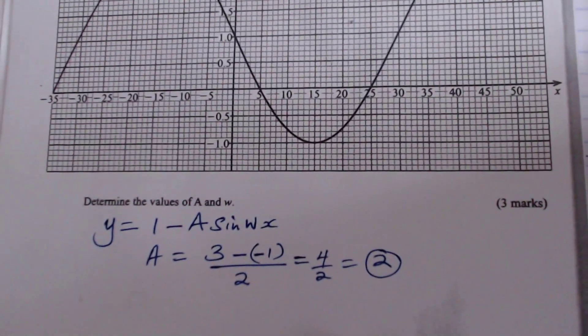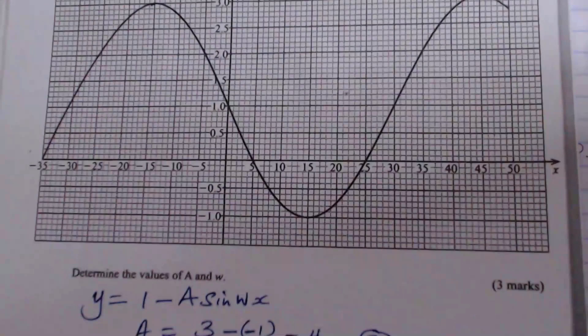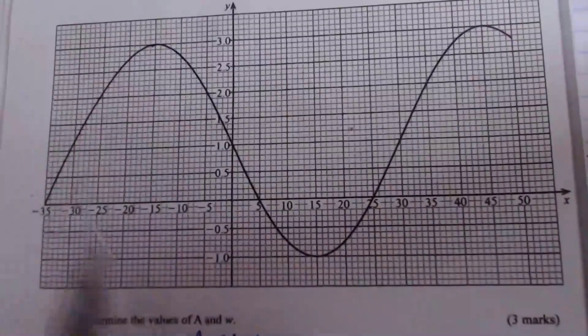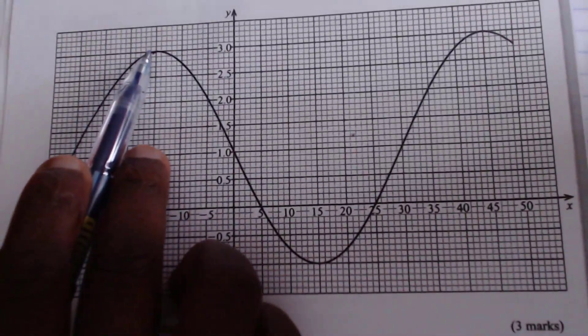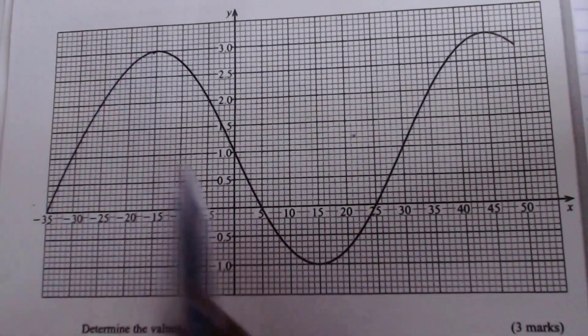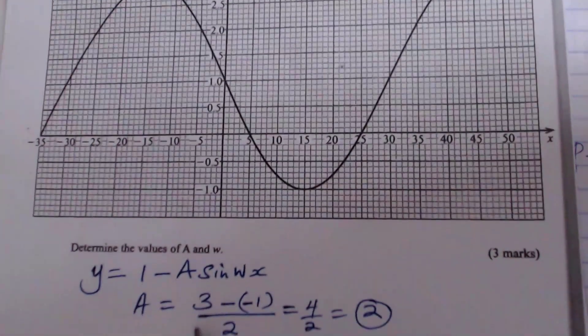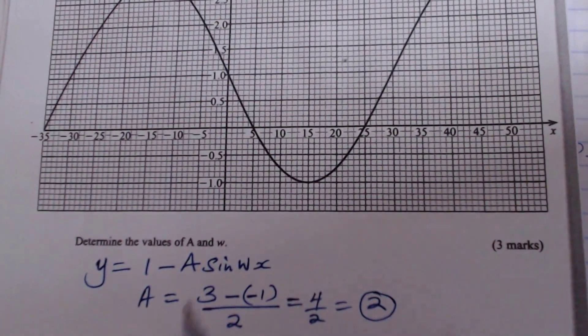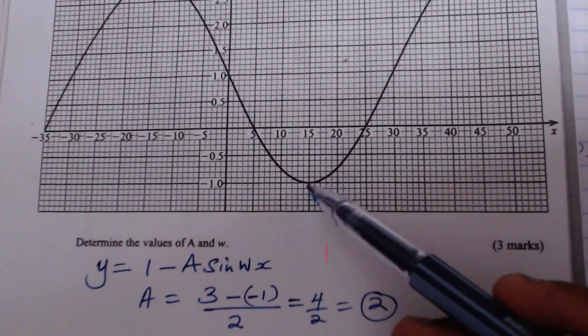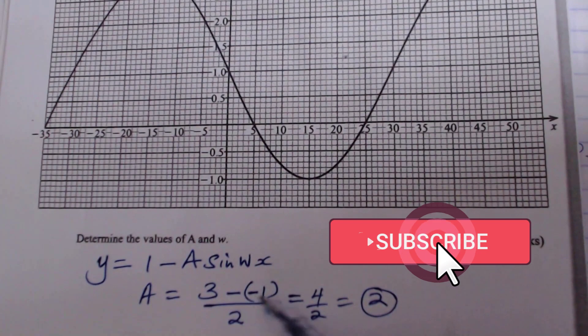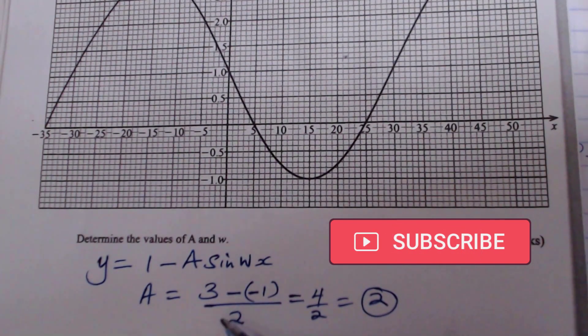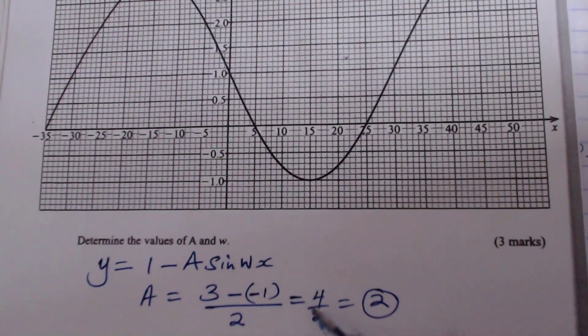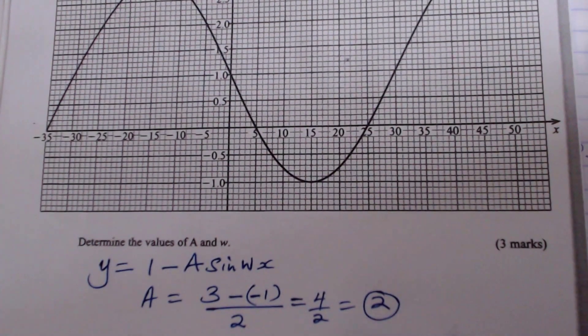So that is how you get it, by simply checking the highest point of the curve, which is 3, then subtract the lowest point of that curve, which is negative 1. You subtract it, then get the average of that, divide that by 2, and that will give you the value of a.